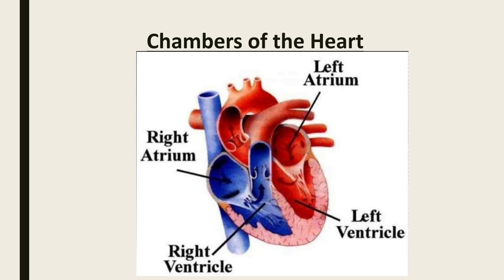In the case of the right ventricle, it carries the deoxygenated blood. So the right ventricle pumps the blood only towards the lungs. The right ventricle's blood moves to the lungs for oxygenation, because it carries deoxygenated blood. The right ventricle pumps the blood from the right ventricle to the lungs.